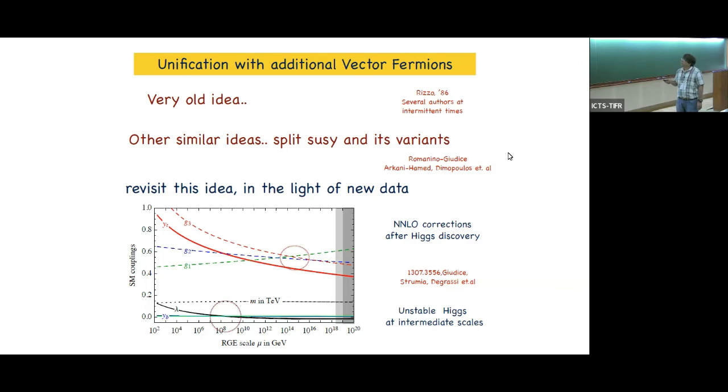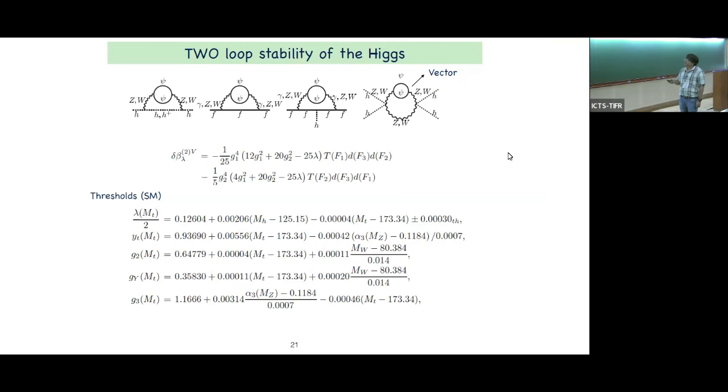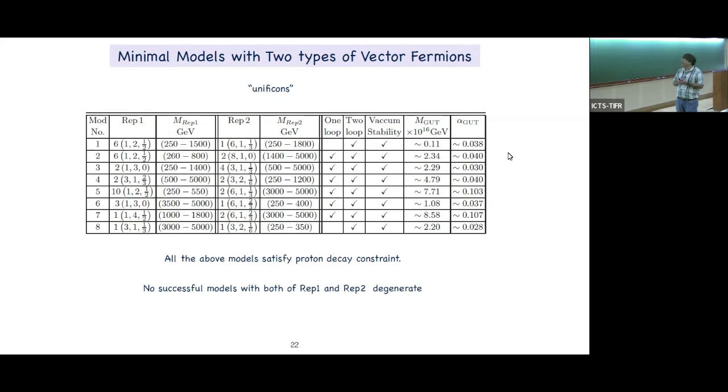This is a very old idea from the 1980s by Rizzo and company. After split supersymmetry and its variants, we thought that maybe we can really revisit this idea, this old idea, but with new data, because now you have the Higgs, you have the running of the Higgs, and so on. The question is whether you can actually make these models stable, the Higgs stable, even up to the Planck scale and so on. It turns out that you have corrections to the RG equations at two-loop through these vector fermions, and you can make them stable all the way up to the Planck scale, up to the GUT scale.